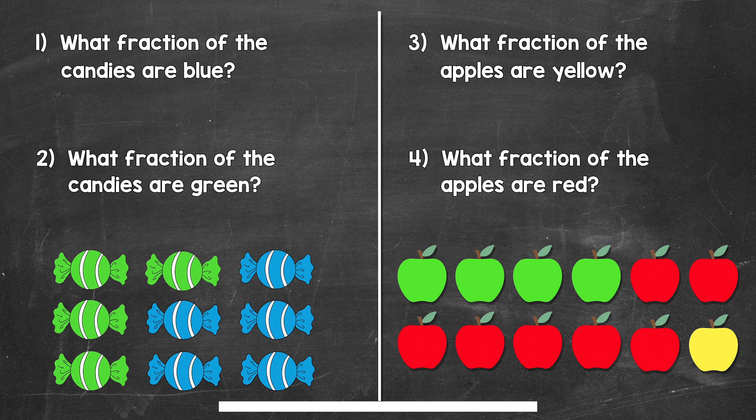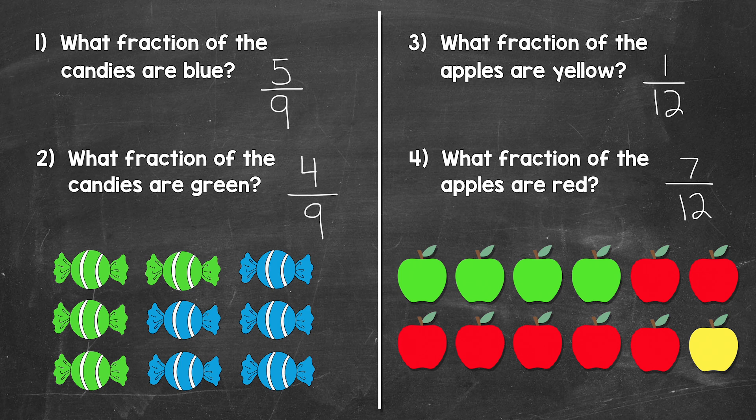Okay, so that's two minutes. Let's take a look at the answers. For number one, we have five ninths. Five of the candies are blue out of the nine in total.